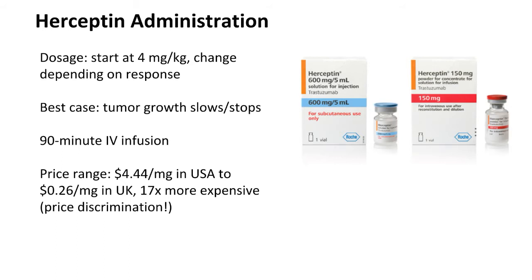If you are a breast cancer patient who is a candidate for Herceptin, you will go in for a 90-minute IV infusion. The price you can expect to pay is $4.44 per milligram in the United States. If you live in the UK, which has the lowest price, you can expect to pay 26 per milligram. The price of medications in the United States is 17 times more expensive, and the reason for that is price discrimination.